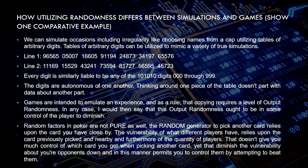The next question is: how does the utilization of randomness differ between simulation and games? We can simulate occasions involving irregularity, like choosing names from a group, using tables of arbitrary digits. A table of arbitrary digits can be utilized to mimic a variety of real-world simulations. For example, with two lines of random numbers, both lines are totally different — every digit is equally liable to be any value from 000 through 999, and the digits are independent of one another.